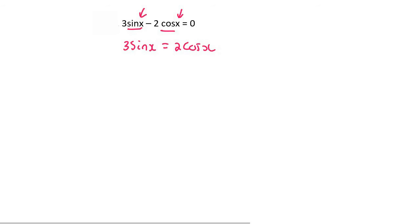Then what you need to do is divide by cos on both sides. So you just divide by cos, and then on the right hand side you're still going to be left with 2. And then that just becomes tan.